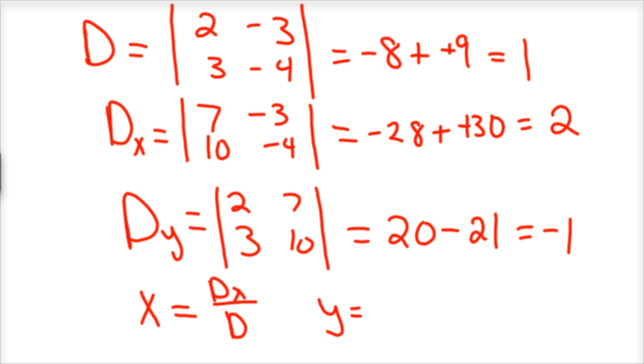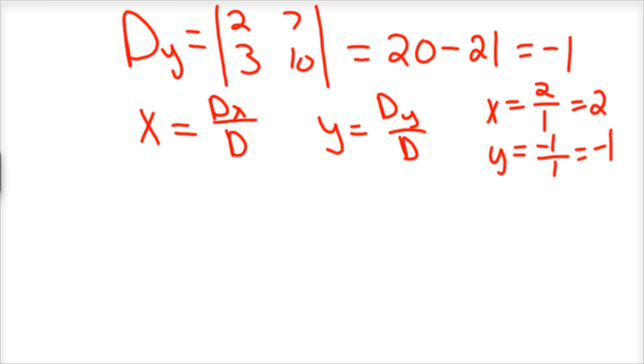And to find your final solution for x and y, x is equal to Dx over your main determinant, and y is equal to Dy over your main determinant. So in our case, x would equal Dx which is 2 over your main determinant which is 1, so that gives me 2. And y would equal your Dy which is -1 over 1. I need to go a little slower I suppose. And so 2, -1 is the solution to those two linear equations.